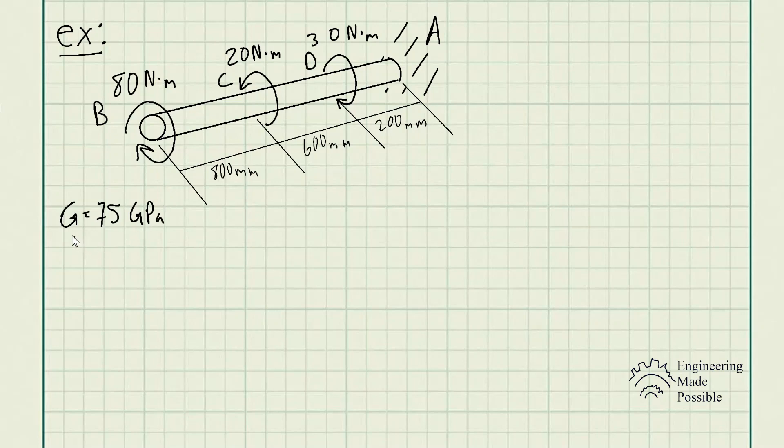So the shear modulus here of steel is 75 GPa. This is something that's known, or you can look up in a table.